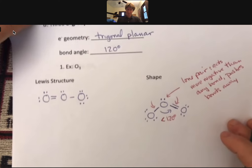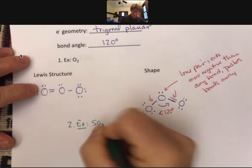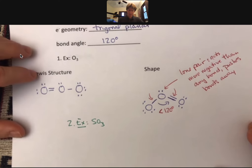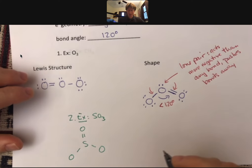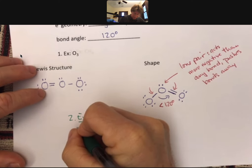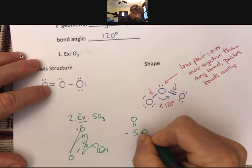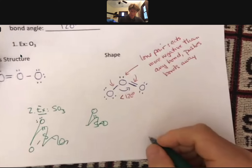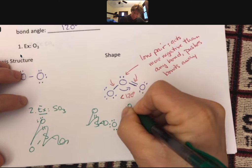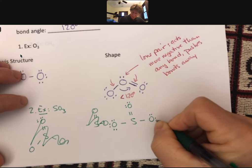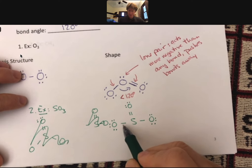So now let's do a second example. This example is going to be sulfur trioxide, SO3. If we were to draw the Lewis structure for this... sorry, I already drew it in its shape. Lewis structure does not show shape. One more time. Lewis structure does not show shape.